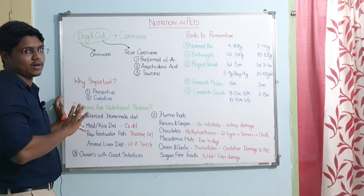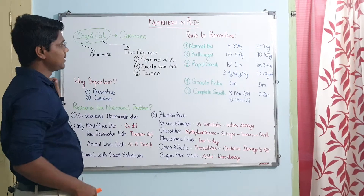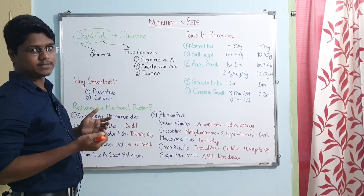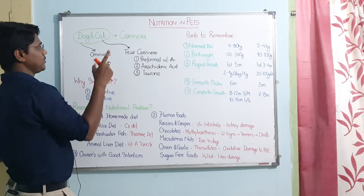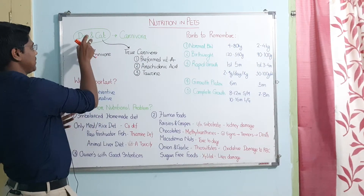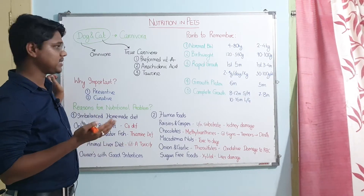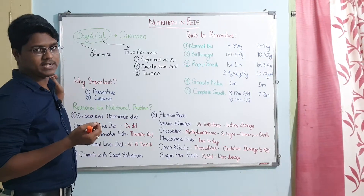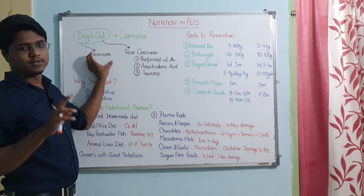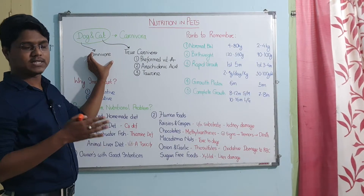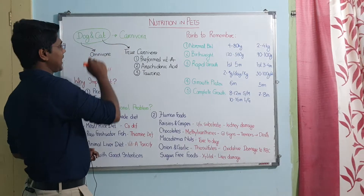Dogs and cats are pet animals that belong to the order Carnivora, meaning meat-eating animals. However, dogs are basically omnivores — they can be on both vegetarian and non-vegetarian diets. But they are not herbivores, so you have to give them both types of food.